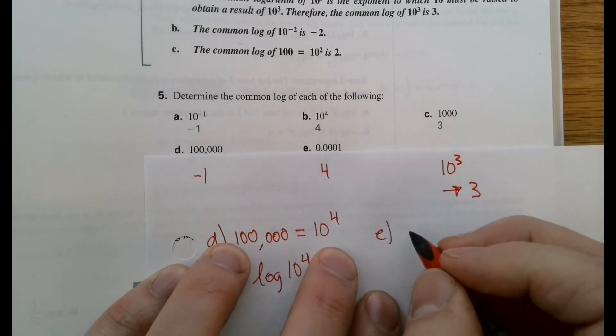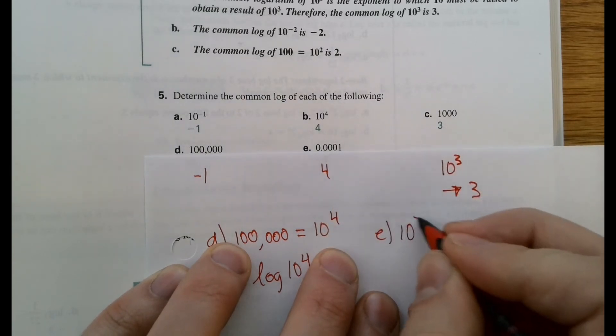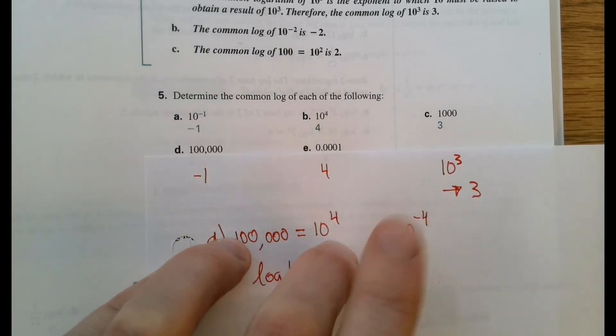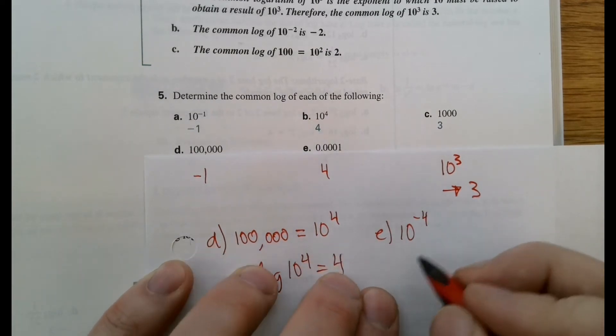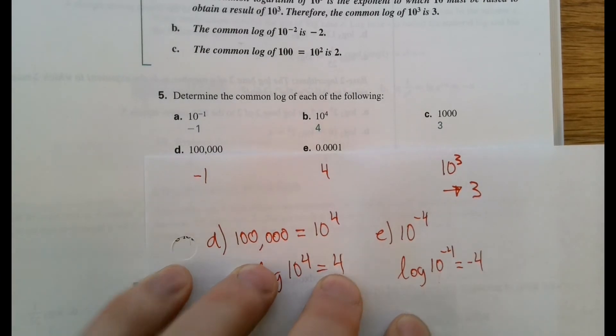This is 1 times 10 to the negative 1, 2, 3, 4. We don't need the 1. It's just 10 to the negative 4. So the common log of that, and we're going to look at this in a second, would be this.